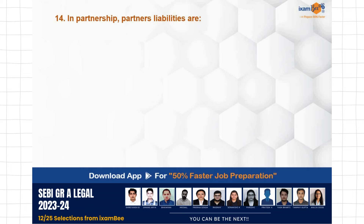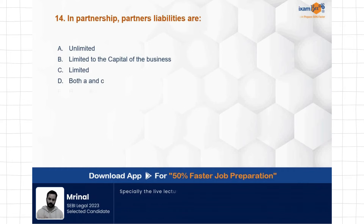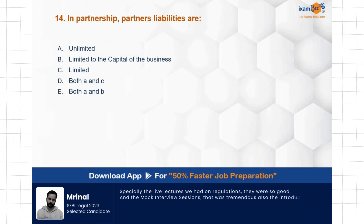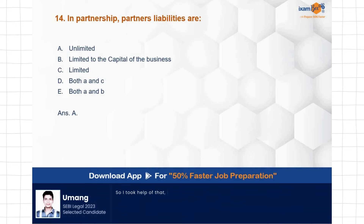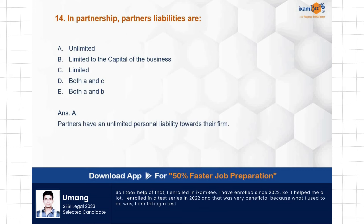Question: In a partnership, partners' liabilities are — unlimited, limited to the capital of the business, limited, both A and C are correct, or A and B are correct. The options are confusing but the correct answer is A — unlimited. Don't get confused. The most appropriate answer is that partner's liability is unlimited. Partners have an unlimited personal liability towards their firm.